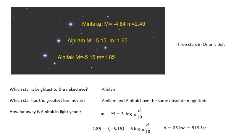Well, which star is brightest to the naked eye? That would be the one with the lowest number for apparent brightness. So that is Alnilam, 1.65. Which star has the greatest luminosity? Well, that would be the one which has the smallest number for absolute magnitude. And you'll notice that Alnilam and Alnitak are both minus 5.15. So they have the same absolute magnitude. They've probably got the same luminosity. How far away is Alnitak in light years? And if you use that equation, you get 251 parsecs, which is 819 light years.